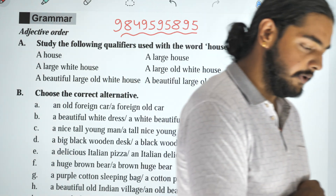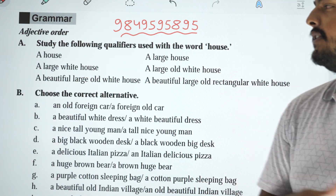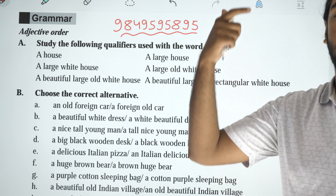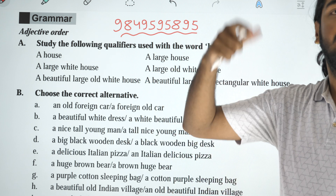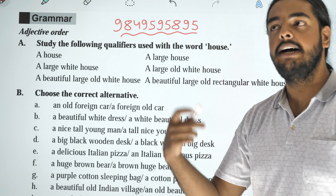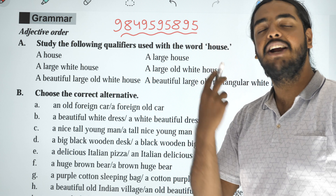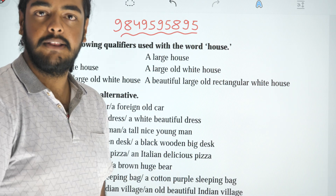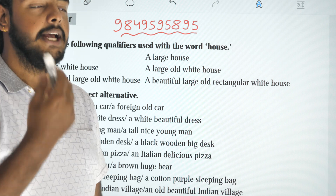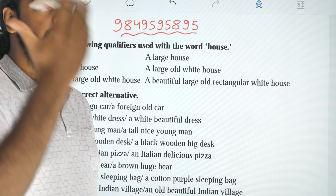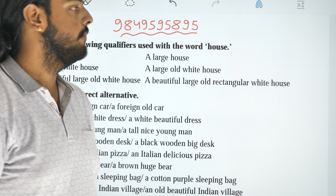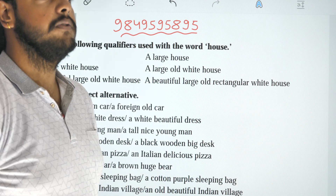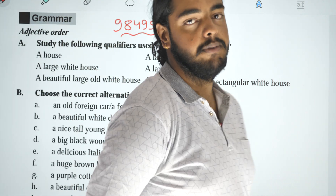An adjective is a word which describes and defines a noun. It is a name — what attributes are called? It is called color, handsome, ugly, young, old, whatever. It is called the Adjective.